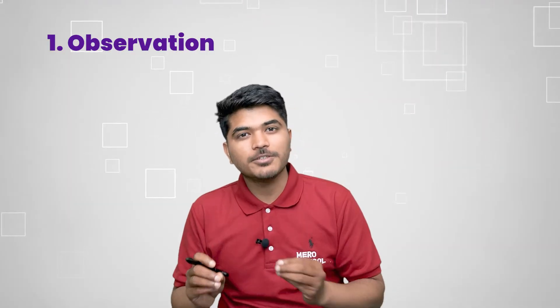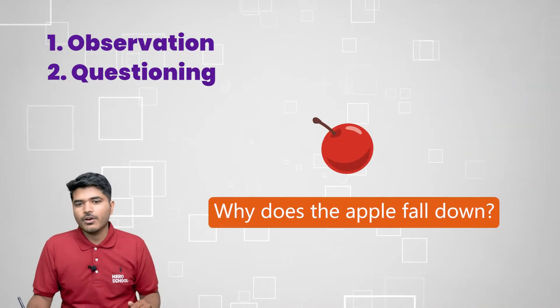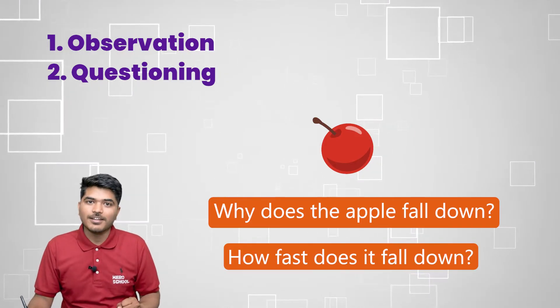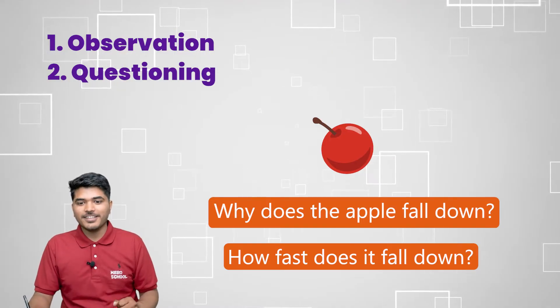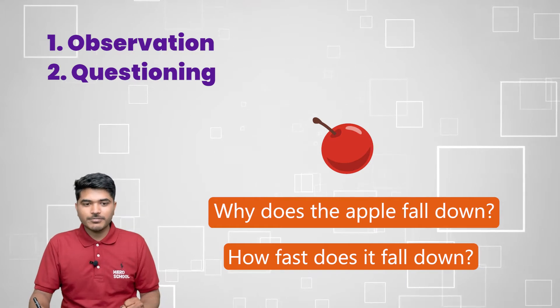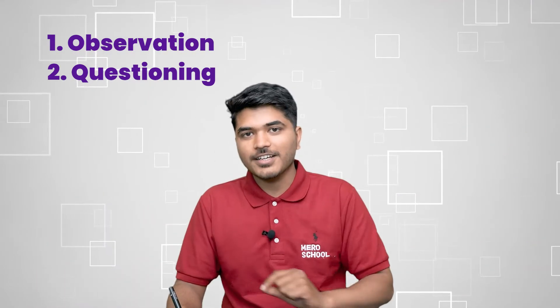These procedures start with one thing we have talked about: observation and curiosity. The first thing you need is observation, and then you need to be curious to ask interesting questions about it. For example, you are walking on the road and you see an apple fall. You ask a very interesting question like, why does the apple fall? Or, how fast does it fall? These are the kinds of questions we saw in the beginning — very interesting questions.